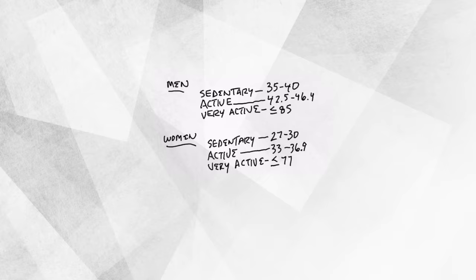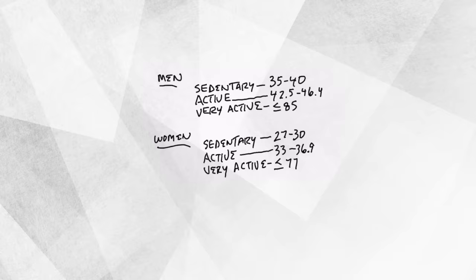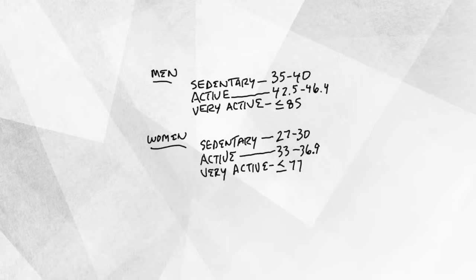an average VO2 max for someone who's sedentary would be roughly about 35 to 40. And then when you go up to active, it goes roughly on average 42.5 to 46.4. And then if you're really active, you're a super athlete, it can go up to like 75 or 85.